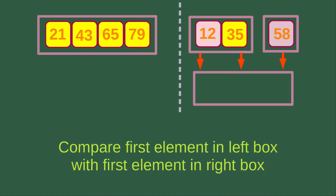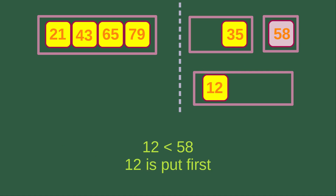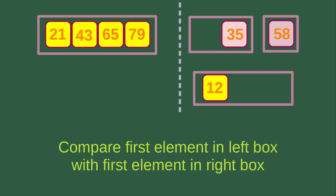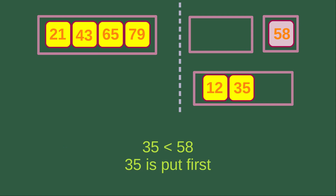After the merging mentioned above, we repeat the comparison process. Now we compare the first element in the left box with the first element in the right box. The left box has 12, and the right box has 58. We see that 12 is smaller than 58, so we put 12 into the merging box. Then we compare 35 with 58: because 35 is smaller than 58, we put 35 into the merging box.